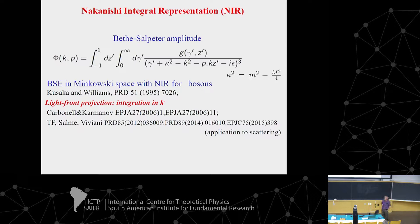The next point is that we solved the two-body bound state using the Nakanishi integral representation. This is the Bethe-Salpeter amplitude. We write it — for convenience — with power three, although power four or similar can be used. If you have two propagators in the Bethe-Salpeter amplitude and use the Feynman trick, you get power two, so power three leaves some dependence for the vertex.